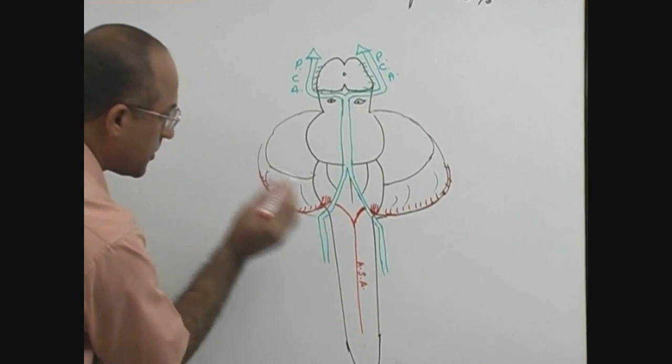But don't forget it supplies the medulla also, because this is important point. People forget this supplies the lateral part of medulla also and this is called posterior inferior cerebellar artery, PICA. What is the meaning of PICA?